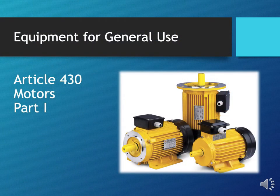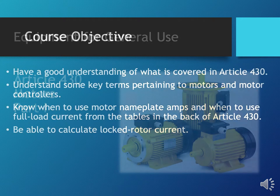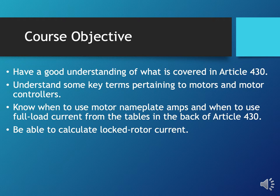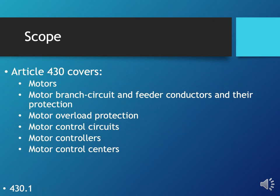Good morning. This presentation is part one of Article 430. The objectives for today are to have a good understanding of what is covered in Article 430, understand some key terms pertaining to motors and motor controllers, know when to use the motor nameplate amps — sometimes referred to as full load amps or FLA — versus when to use the full load current or FLC from the tables in the back of Article 430, and also to be able to calculate locked rotor current.